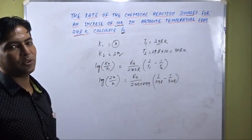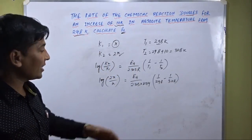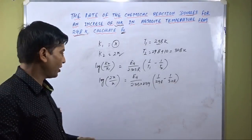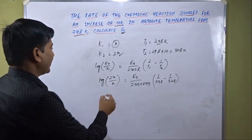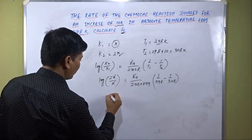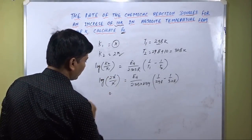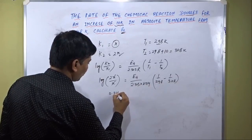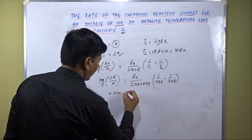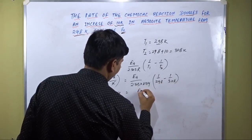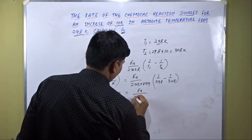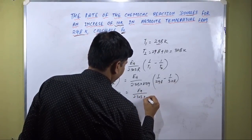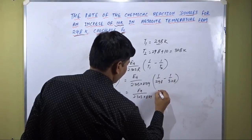Now this is the expression we get. We can simplify this expression and calculate Ea. The x values cancel out. Log(2x/x) equals log 2, which equals 0.3010. This is equal to Ea divided by 2.303 multiplied by 8.314.